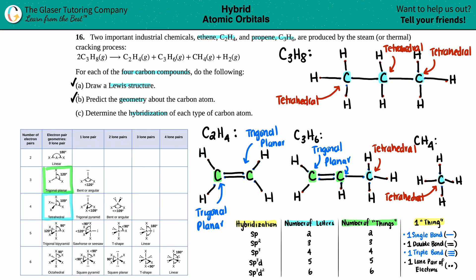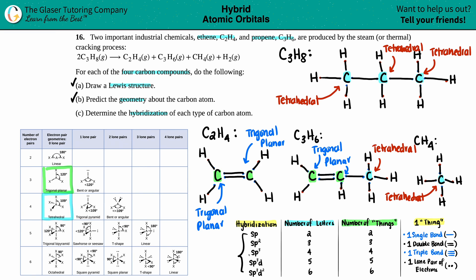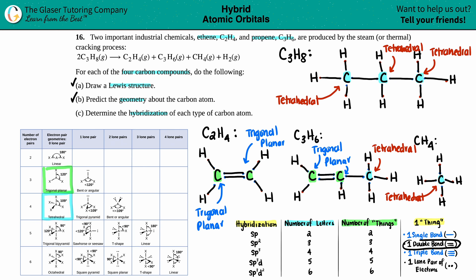Now for part C: determining the hybridization of each carbon type. There are five total hybridizations. The hybridization corresponds to the orbitals overlapping to form bonds, and it's linked to the number of letters: SP² has three letters total, SP has two. The number of letters equals the number of 'things' surrounding that element — where one single bond, one double bond, or one triple bond each counts as one thing.